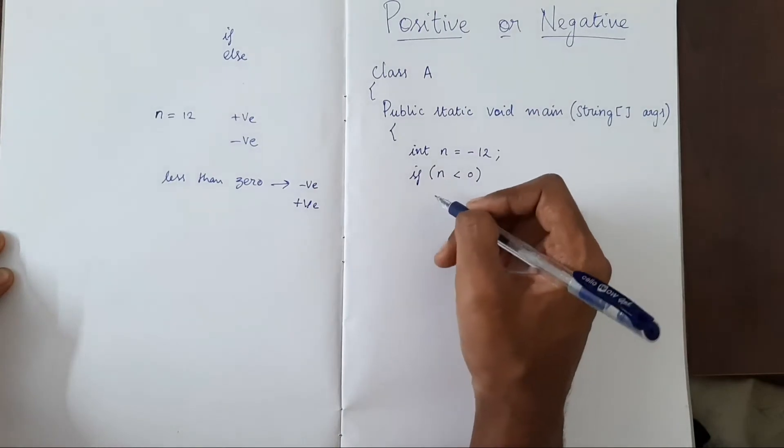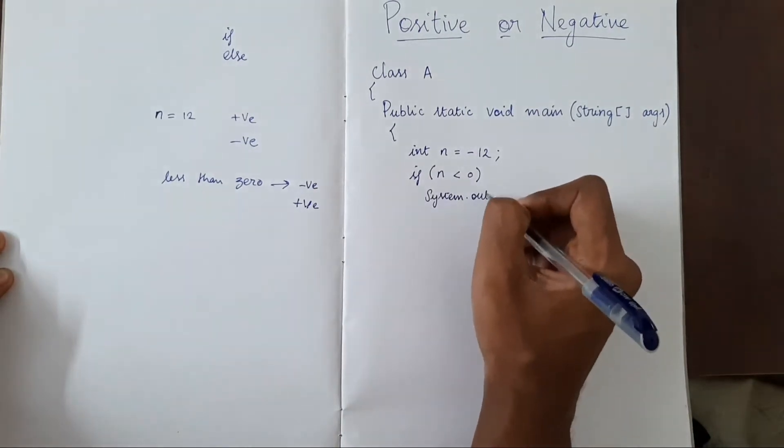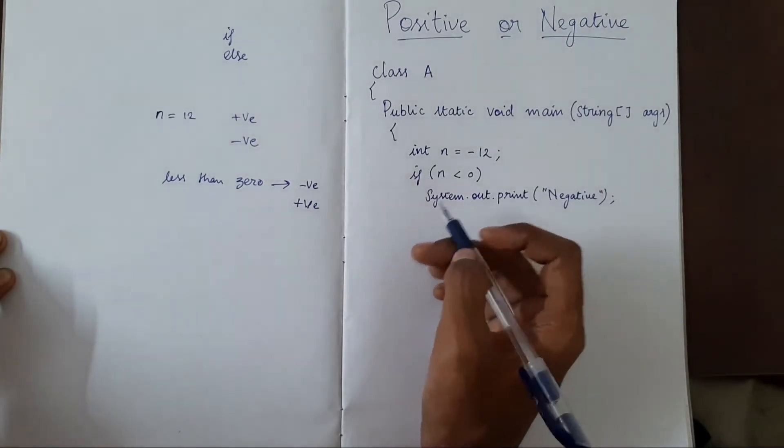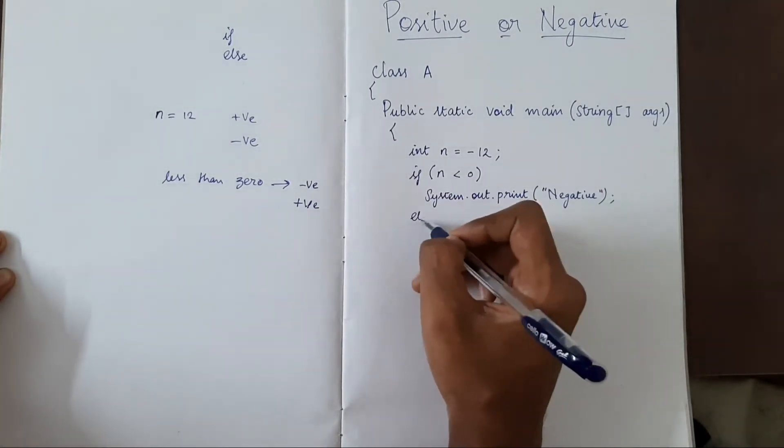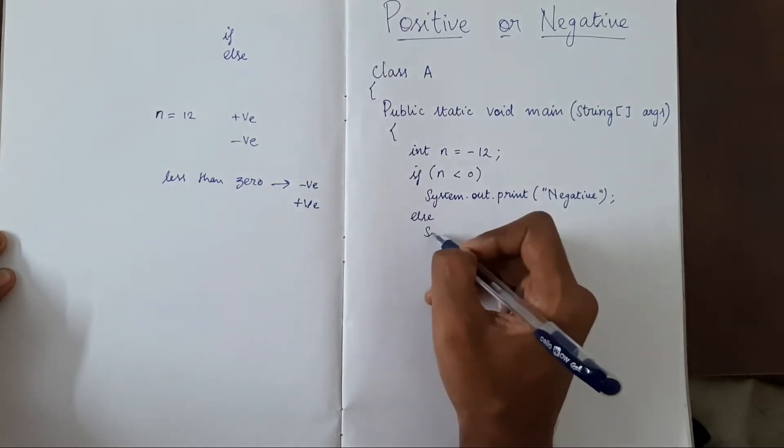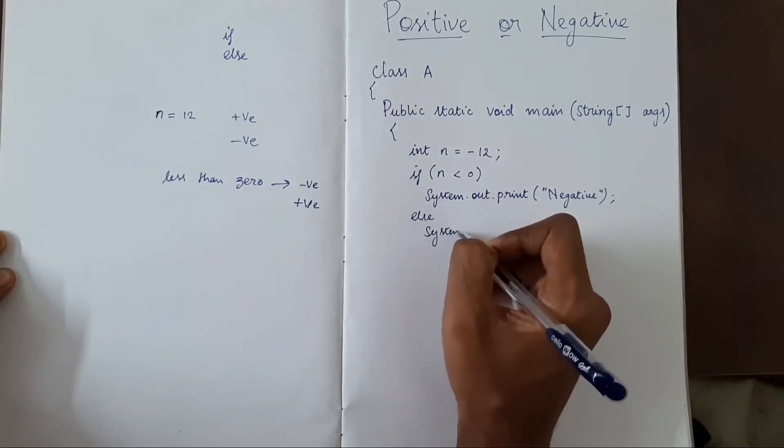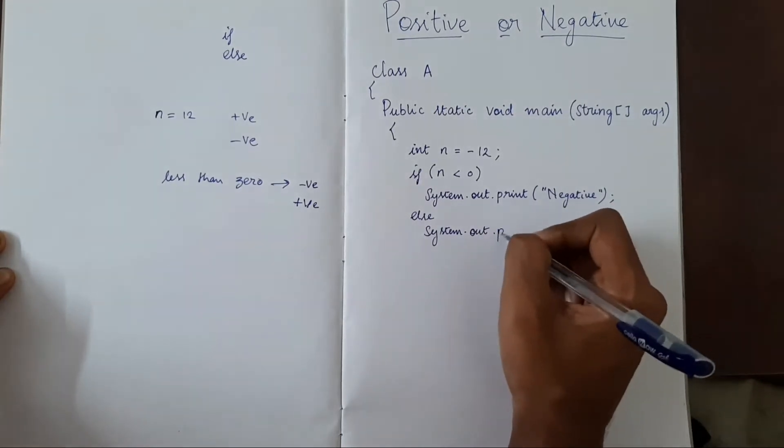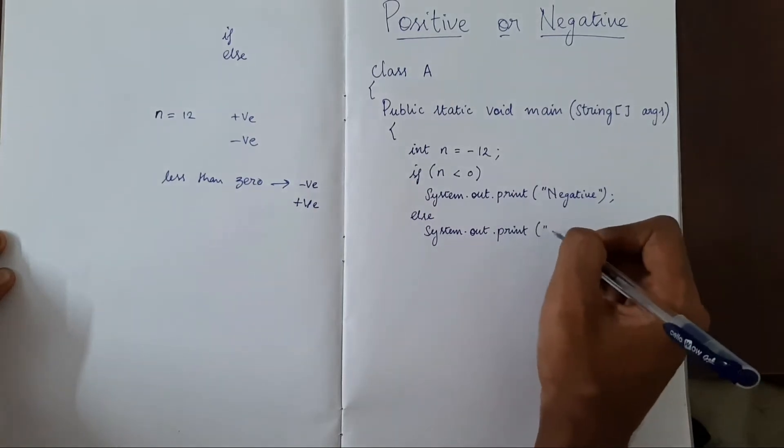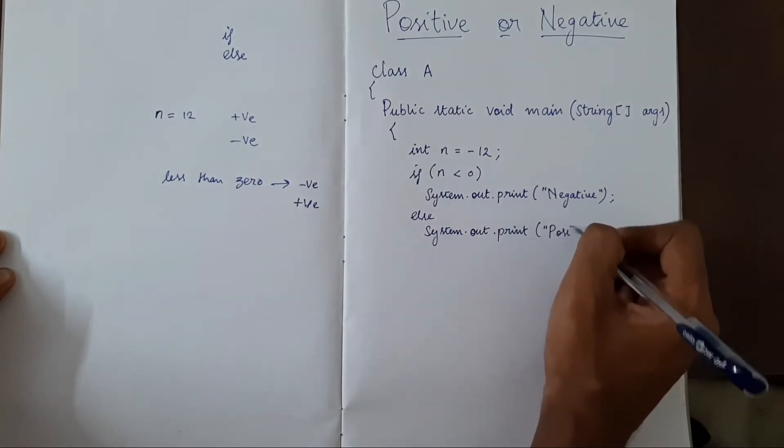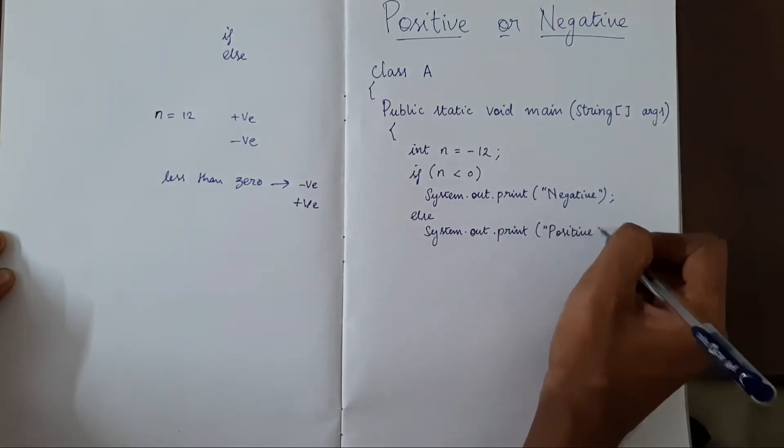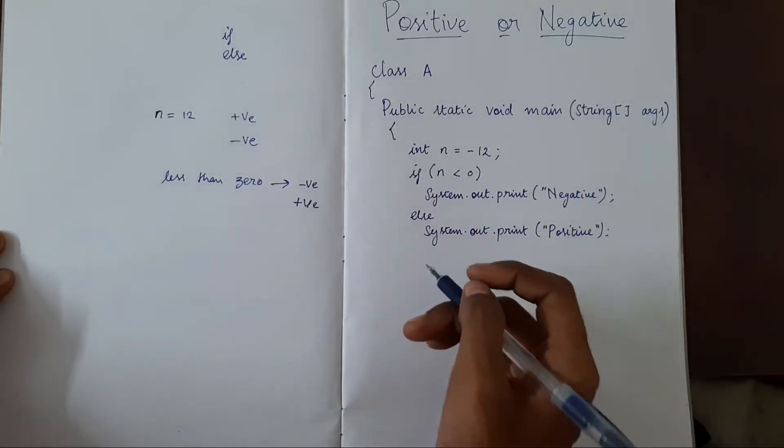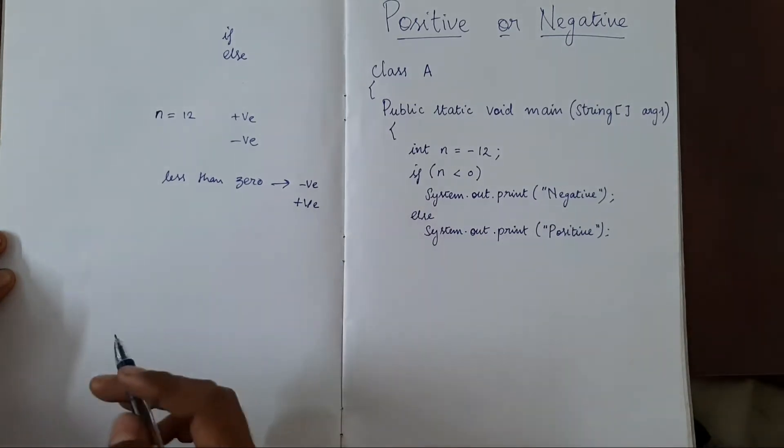we will print negative. Or else, if it is not negative, it is positive. So we'll put else, we'll print positive. This is done using if-else, we can do it like this.